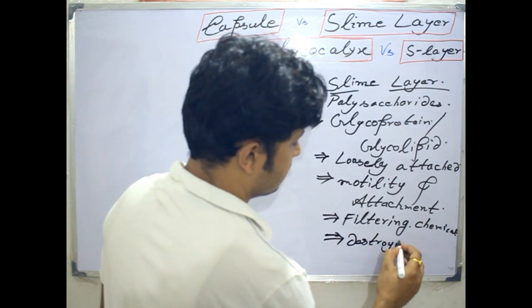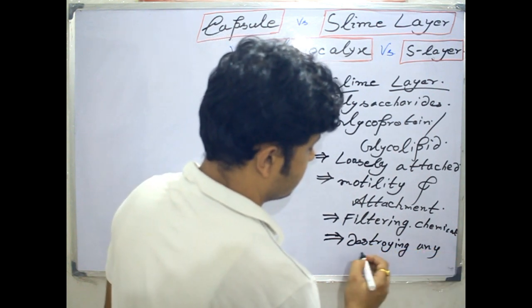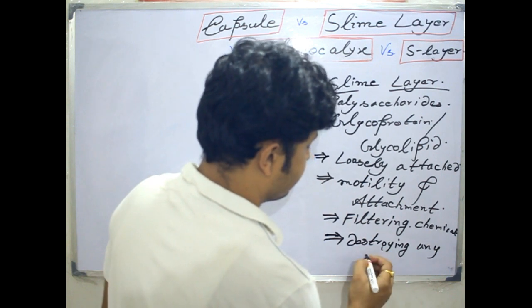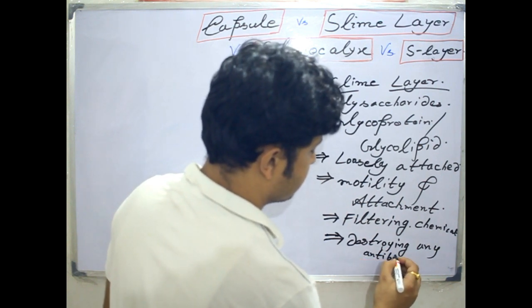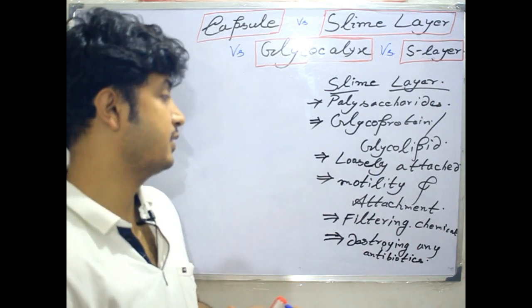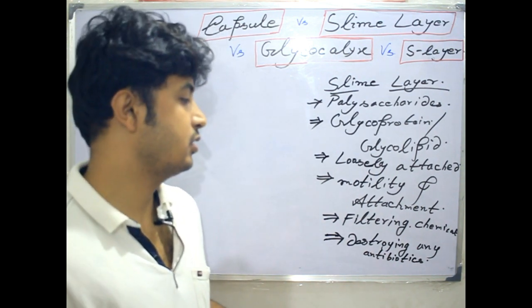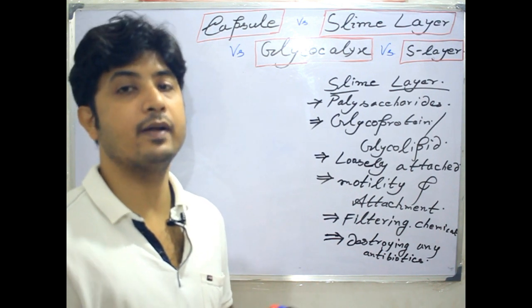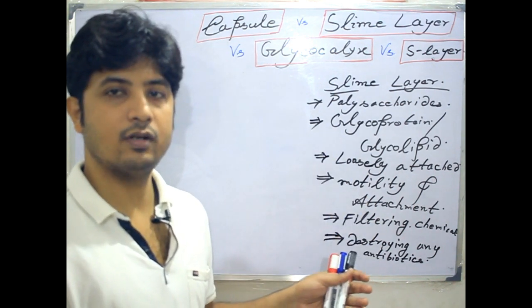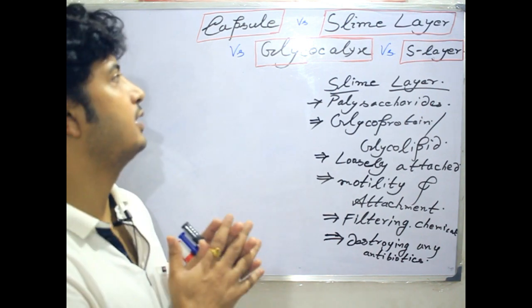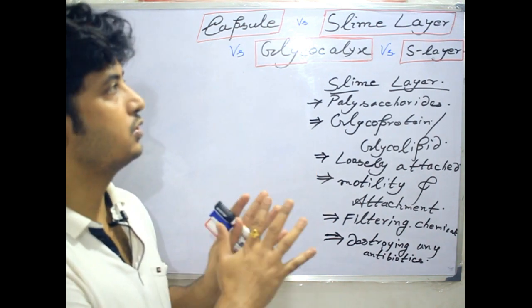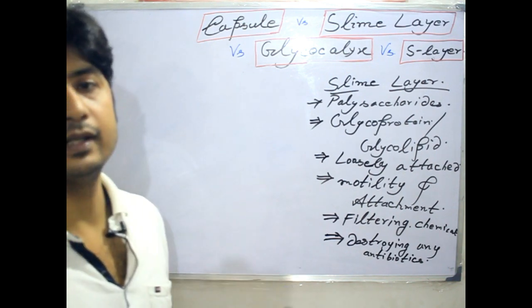Apart from filtering, the slime layer is also useful for destroying — or more accurately, not permitting antibiotics to enter into the cell. So it helps in the defense mechanism of bacteria. Up to this point I have explained capsule, slime layer, and glycocalyx. Glycocalyx is divided into two parts. Now, what is the S layer?